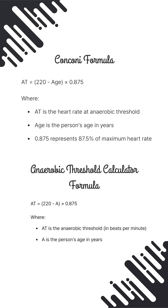The Conconi formula is also an option: 220 minus age, multiplied by 0.875. An anaerobic threshold calculator for...